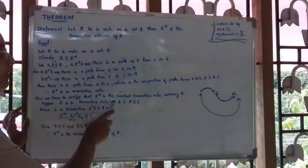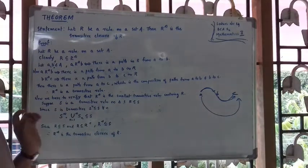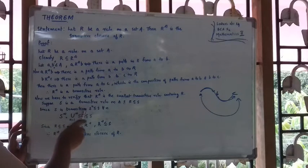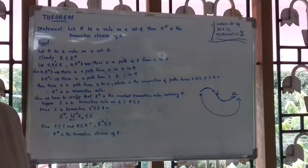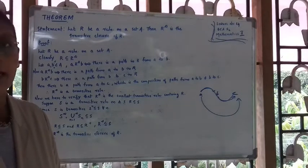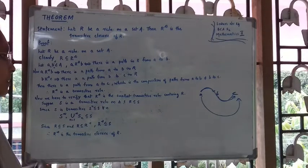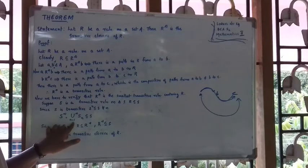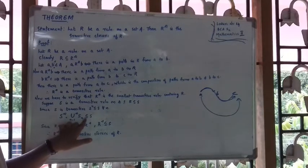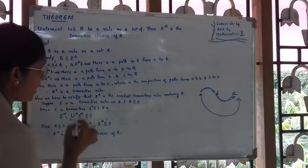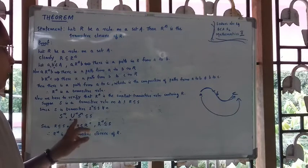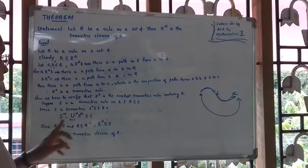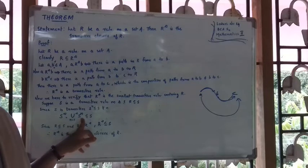Suppose S is a transitive relation on A such that R is a subset of S. Since S is transitive, S raised to N is a subset of S for every N. Now, S-Infinity is actually the union of S raised to N, for N equal to 1 to infinity. So S-Infinity equals the union from N equals 1 to infinity of S raised to N, which is a subset of S.